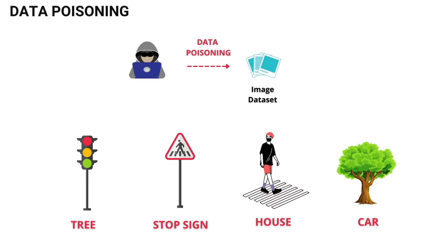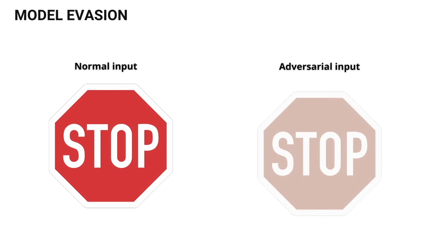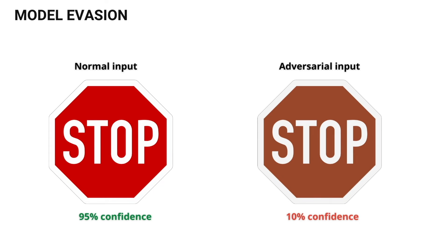Similarly, model evasion: these are called adversarial inputs — malicious inputs where the attacker tries to evade the machine learning model, especially when computer vision is involved. By slightly manipulating the input, just slightly altering pixels, you can produce a completely different output. It's essentially noise put into the image that is unnoticeable to human beings — you will still understand what the image is, but the AI will completely reclassify it. A normal input of a stop sign may have 95% confidence, but just changing a little bit of color can drop it to 10% confidence. The car will not recognize the stop sign and will keep driving, potentially leading to accidents and injuries.